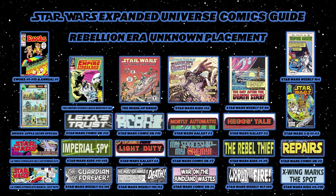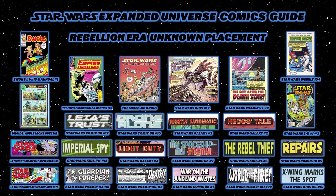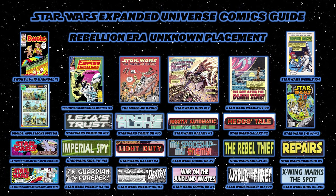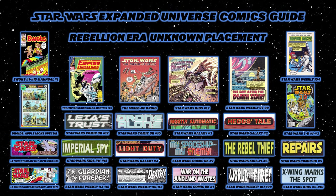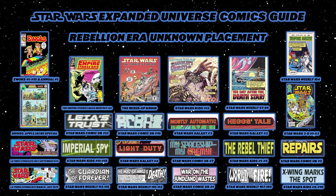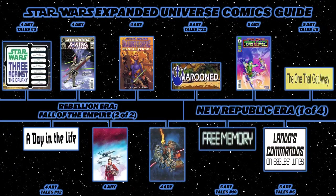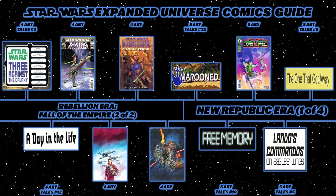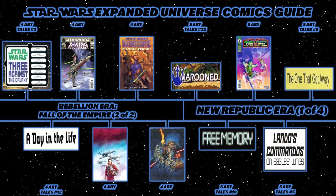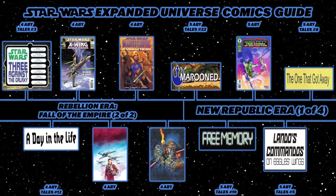Just as with the Rise of the Empire era, there are Rebellion era stories with unknown placement — all shown on the graphic for you to screenshot and place as you see fit. We now move into the New Republic era, which is larger for novels than comics but still has big stories. Starting with Star Wars Tales number 22's Marooned, then Tales number 10's Free Memory. Then a series of Boba Fett one-shots, beginning with Boba Fett: Twin Engines of Destruction. Then Tales number 5's Lando's Commandos on Eagle's Wings, Tales number 8's The One That Got Away, and Tales number 17's Phantom Menaces.